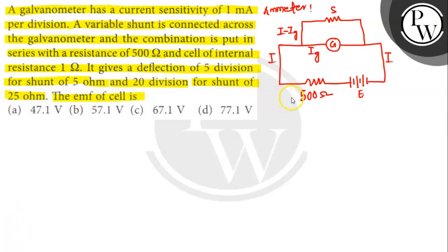This is the circuit diagram according to the given condition. If the current through the resistance is I and the current through the galvanometer is IG, then the current passing through the shunt will be I minus IG.